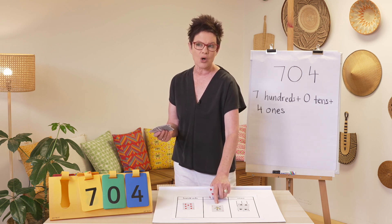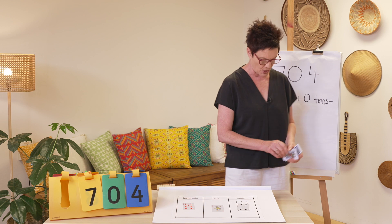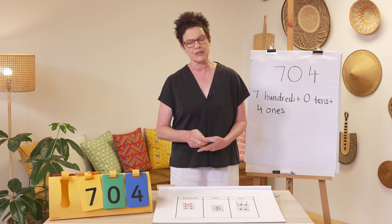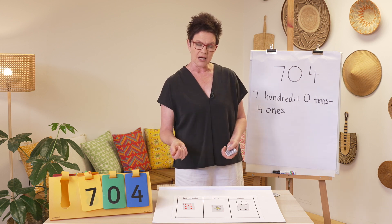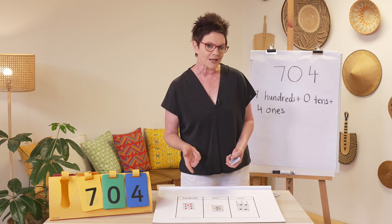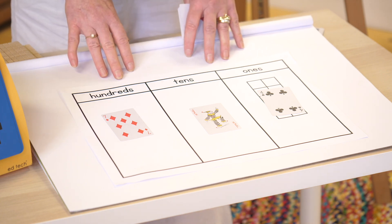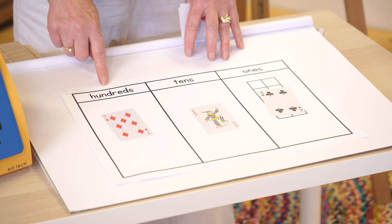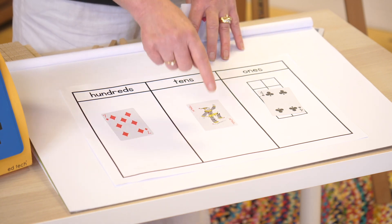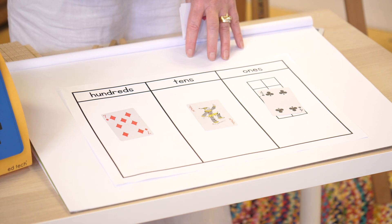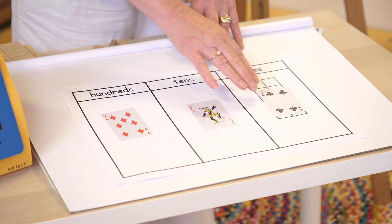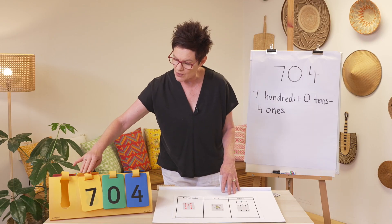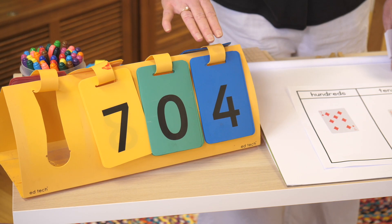I'm going to shuffle these up and deal out some cards. Loretta's done the first one for us. Loretta dealt out seven in the hundreds, we used our joker — which is zero, and zero means none of something — and a four in the ones. Loretta was right: she said it was 704.